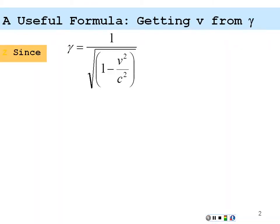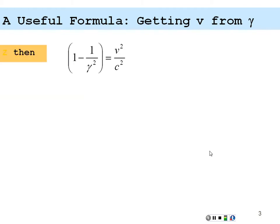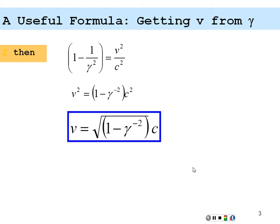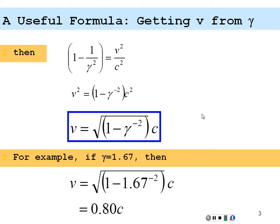A useful formula is to get the velocity quickly from gamma — just reverse-engineering the algebra of gamma, squaring it and doing a little algebra. We have velocity squared equal to one minus gamma to the negative two, times c squared. So our relative velocity is equal to the square root of one minus gamma to the negative two, times c. For example, if gamma is 1.67, plug that in: one minus 1.67 to the negative two, square root, times c, gives 0.8c. A handy formula, especially for problems.